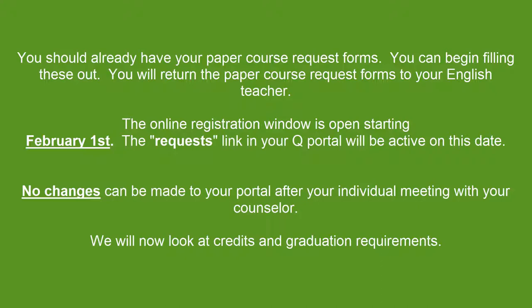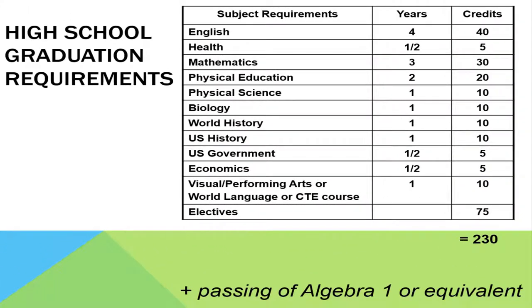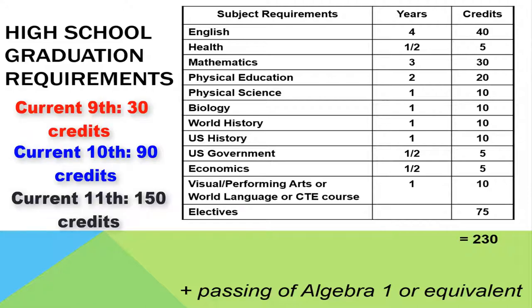We will now look at credits and graduation requirements. Here are the high school graduation requirements. You need 230 credits plus the passing of Algebra 1 in order to graduate. By this semester, current 9th graders should have at least 30 credits, current 10th graders should have at least 90 credits, and current 11th graders should have at least 150 credits.